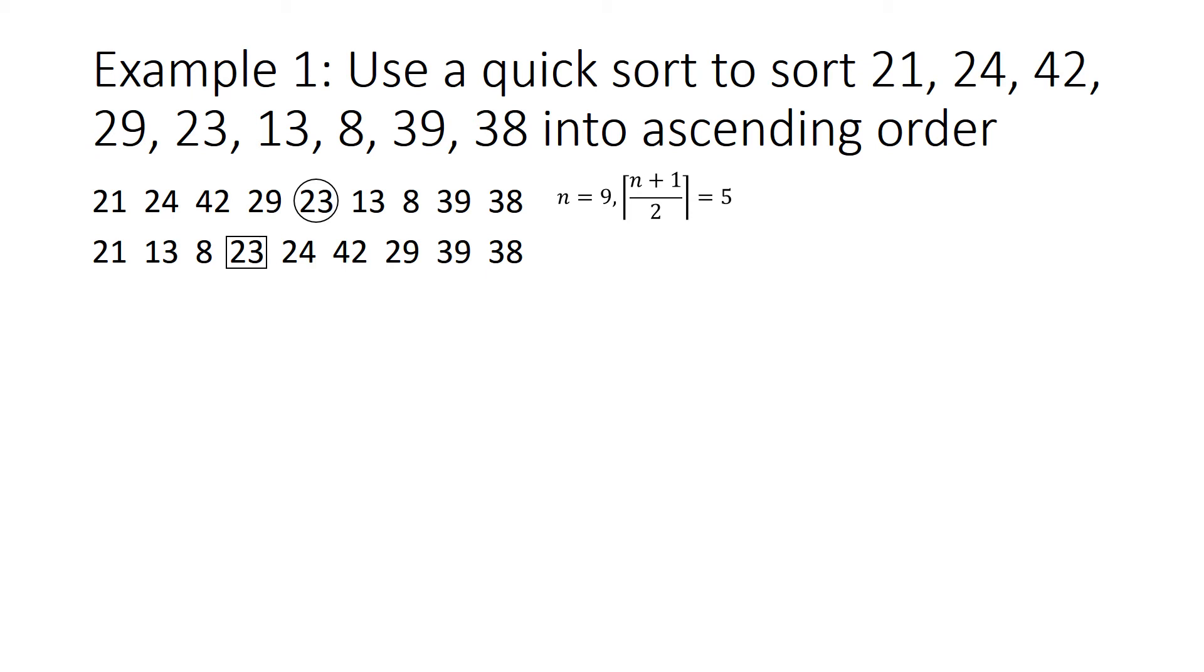So now we've got two sublists of size 3 and 5. So we'll do the calculations again and our midpoints will be 2 and 3. So we'll circle them. We'll just repeat the same process as we did in the first row, but for both sublists now.